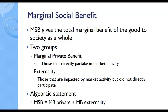Here's the algebraic restatement I like to use because it's helpful with the graph: MSB, marginal social benefit, is equal to MB — the marginal benefit, assumed to be the marginal private benefit, sometimes written as MPB — plus the externality, which for our purposes will have a dollar value.